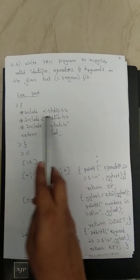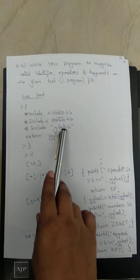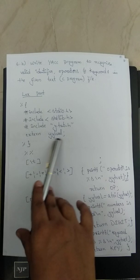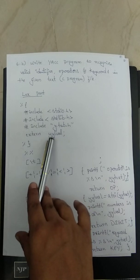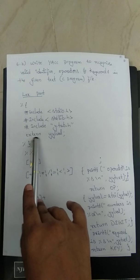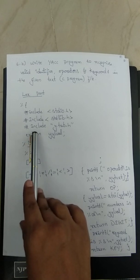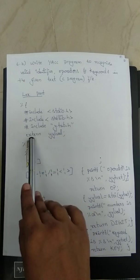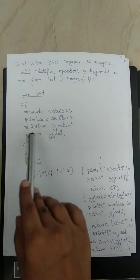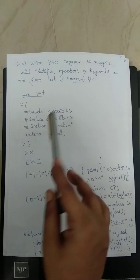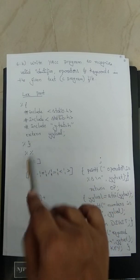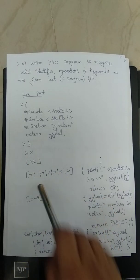In the LEX part, header files are declared and y.tab.h is included. The global variable yylval is declared with the keyword extern. This declares the variable without assigning any memory to it. Next comes the rule section.